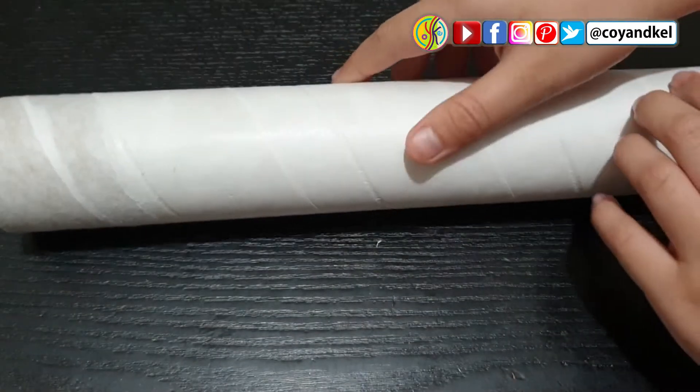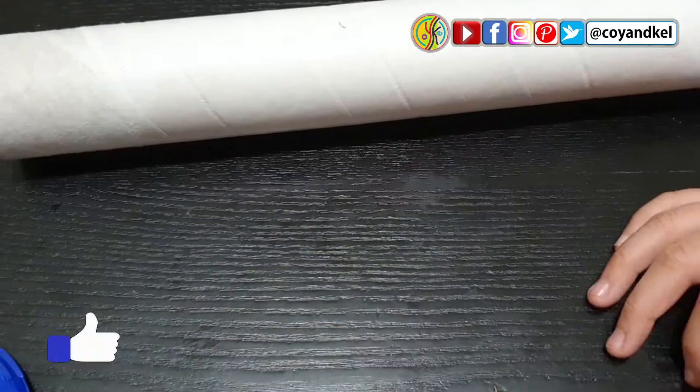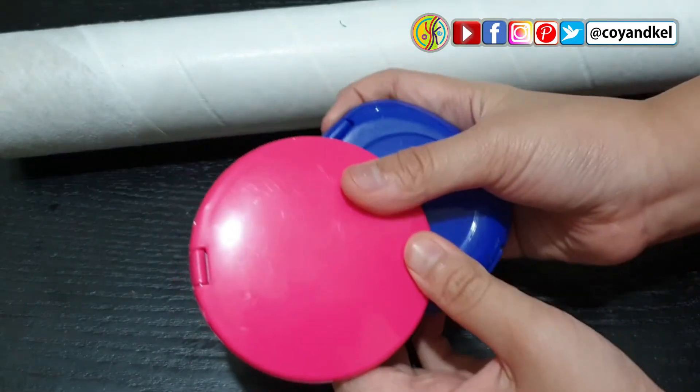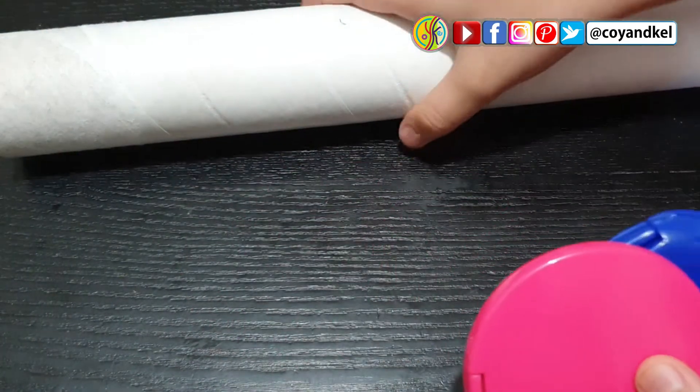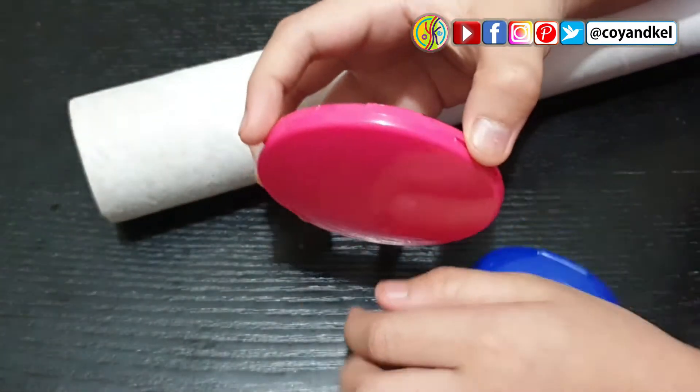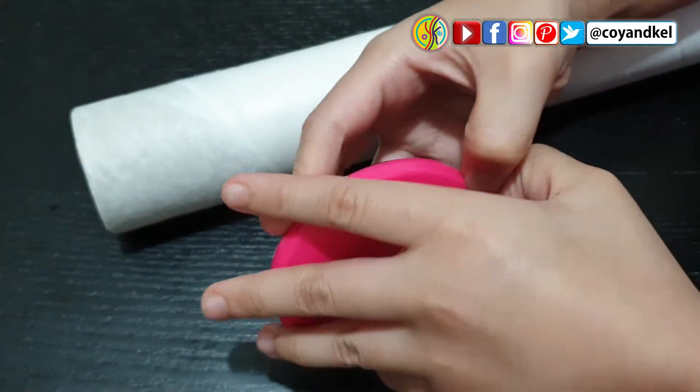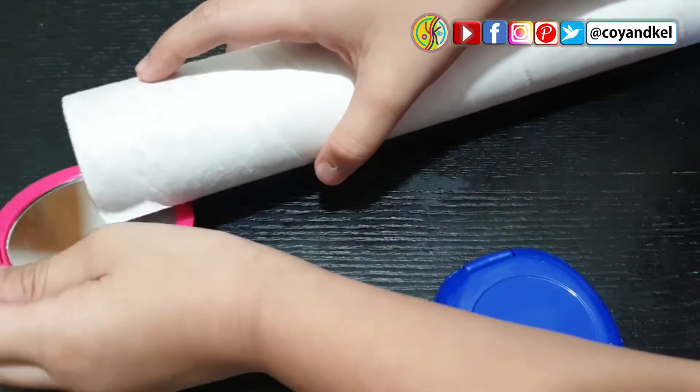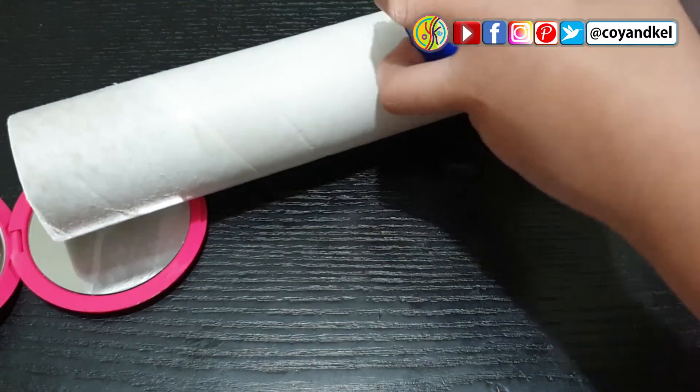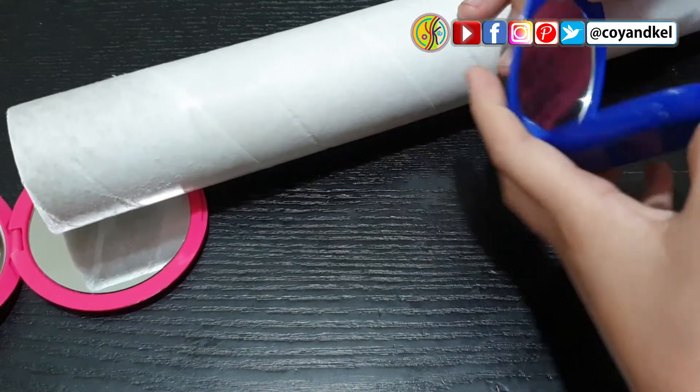Now let's begin! First you'll get your recycled tissue roll holder. Then next you must get your two used makeup mirrors, and we'll connect them to our recycled tissue roll holder. First you must open your mirror. Then put it over here at the bottom of your tissue roll holder.